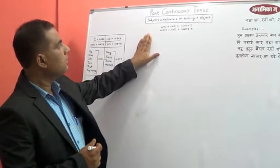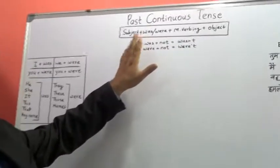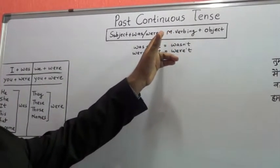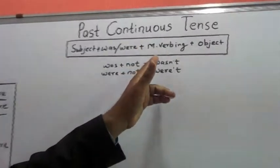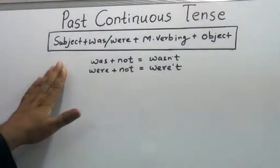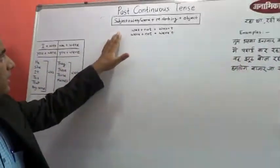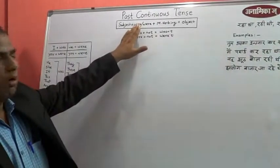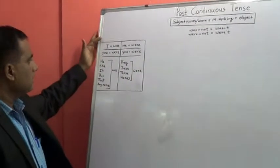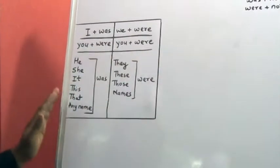So let's have a look at the structure. As you can see, subject is always the first, followed by the helping verb — was or were — followed by the main verb with -ing because the action is going on, and ultimately we have the object. So with the help of this structure we can frame the sentences of this tense. Now let's see how and when was and were are used.